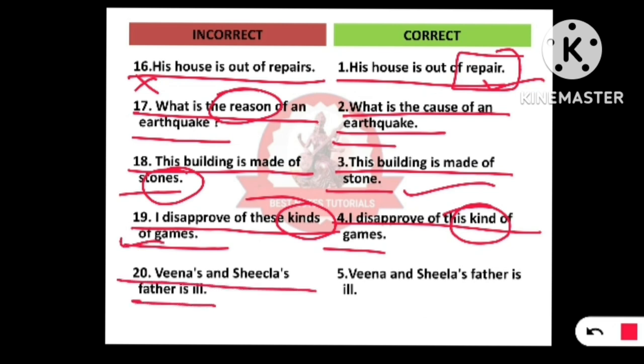Final example: 'Veena and Sheila's father is ill.' There should not be an apostrophe mark only on Sheila's name — the possessive mark should apply to both girls' names correctly.